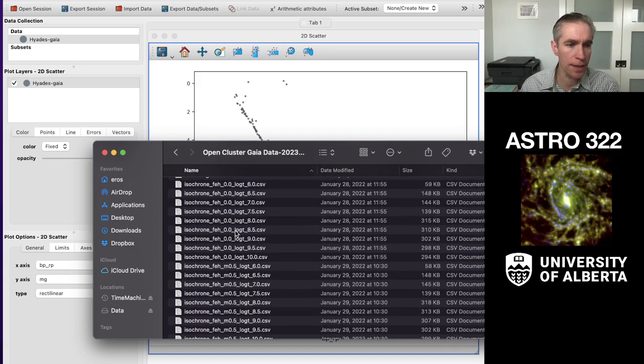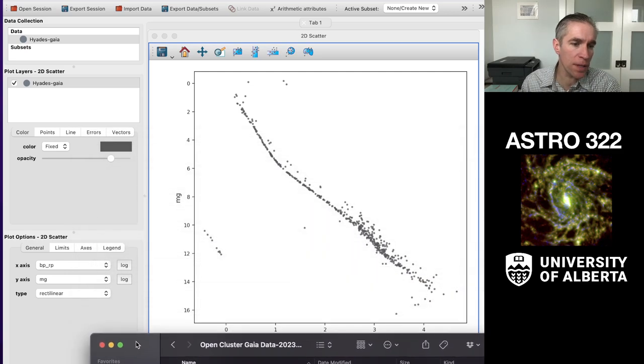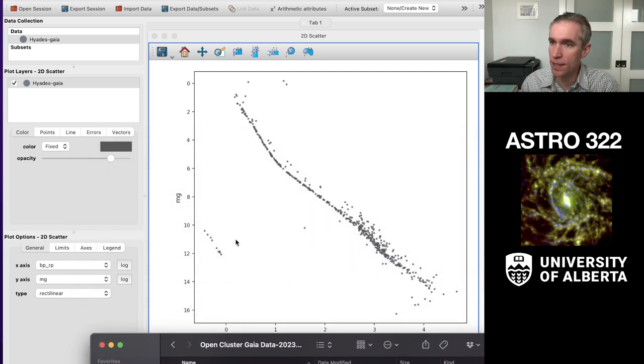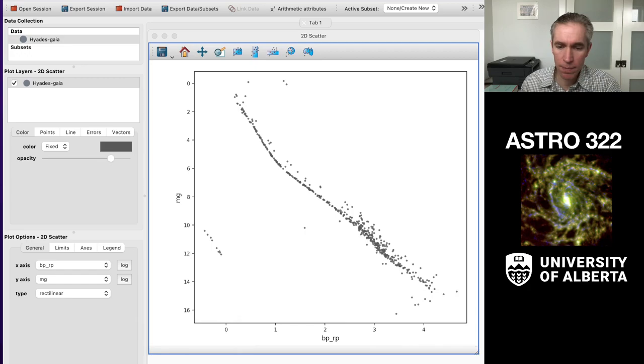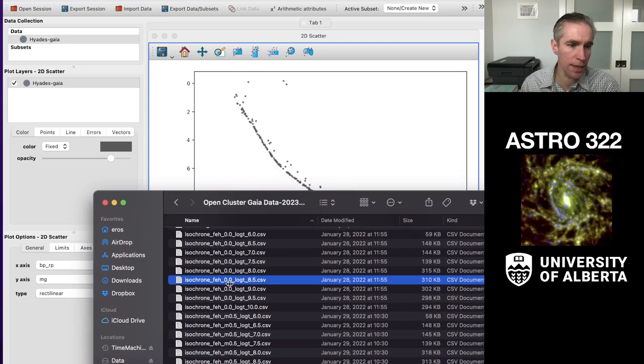So what I need to do is I need to load in one of these isochrones. And I'm going to guess that this is, I'm going to pick about 300 million years. Mostly motivated by the fact that there are white dwarfs down here. And so we have to have stars that have formed a substantial number of white dwarfs. So what I'm going to do is take this little isochrome and drop it into glue.